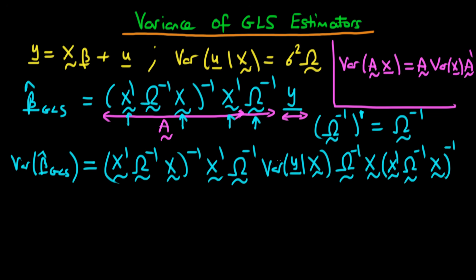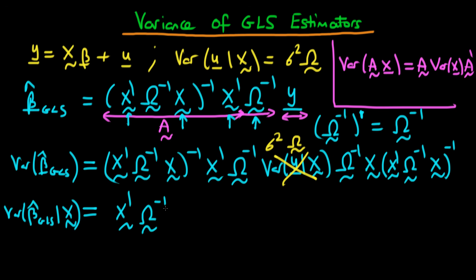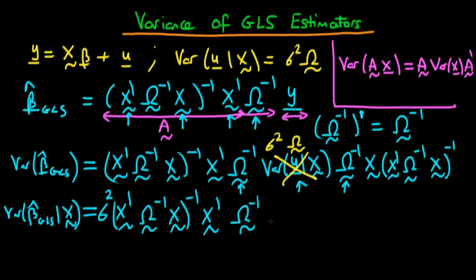Replacing Var(y|X) with σ²Ω, we can simplify. The variance of β̂_GLS given X equals (X'Ω⁻¹X)⁻¹ X'Ω⁻¹ · σ²Ω · Ω⁻¹X · (X'Ω⁻¹X)⁻¹. Taking σ² out as a scalar, we get Ω⁻¹·Ω = I (the identity matrix), leaving a further Ω⁻¹, then X, then (X'Ω⁻¹X)⁻¹.